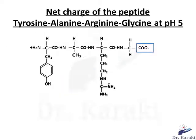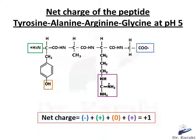Now let's look at the structure of the peptide chain at pH 5. We have COO- (negative), NH3+ (positive), OH which is not charged, and the guanidino which is positively charged. So the net charge of the peptide tyrosine-alanine-arginine-glycine at pH 5 is equal to +1.